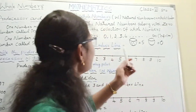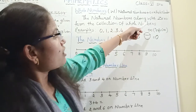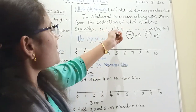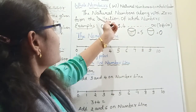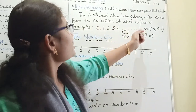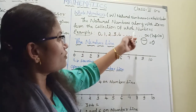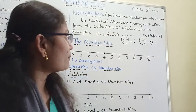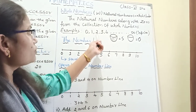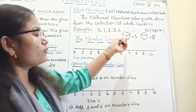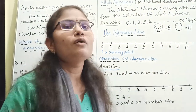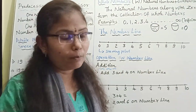The natural numbers along with 0 form the collection of whole numbers. For example, 0, 1, 2, 3, 4 till infinite — these numbers we are going to call whole numbers.